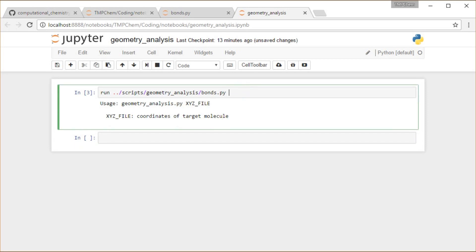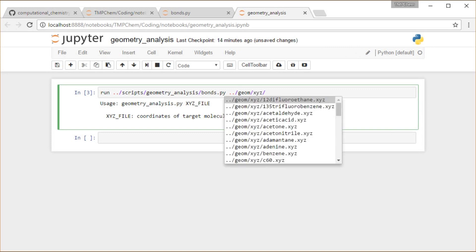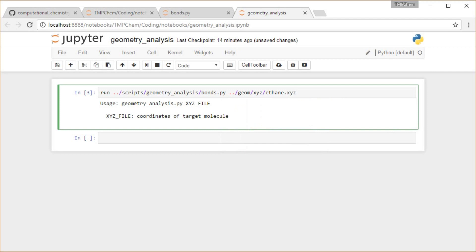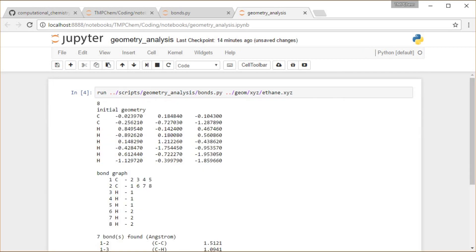So I need to give it an XYZ file with the target molecule. So I'm going to say space ../. I'm going to go to this geom directory where I keep a bunch of structures. Tab, xyz. And then tab. Inside this directory, I have a bunch of molecules inside there. So what if we want to do this for ethane? So I have an ethane file inside there. Enter. And then shift enter to run this.